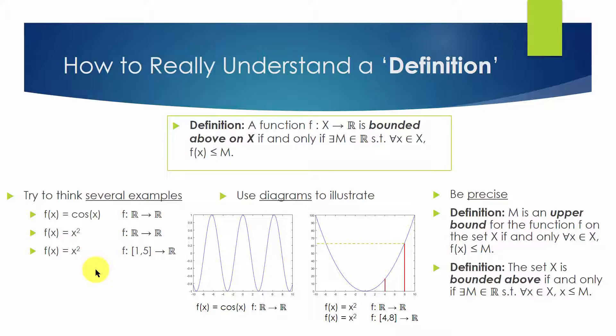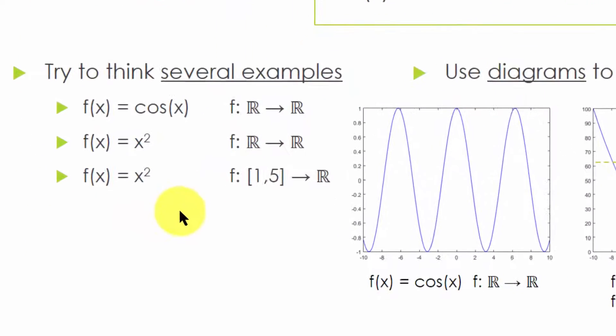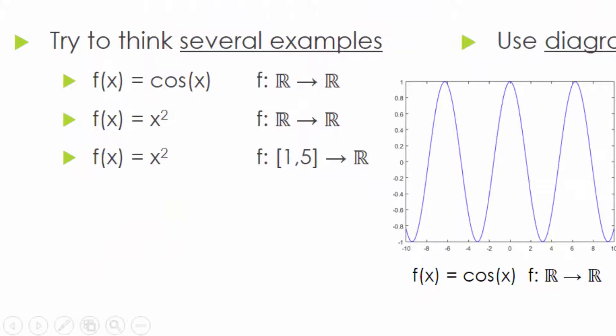So any function that meets these conditions are included. So the first technique is to think about a few examples. Our first example is f(x) equals cosine x, defined from the reals to the reals. Is it bounded above?